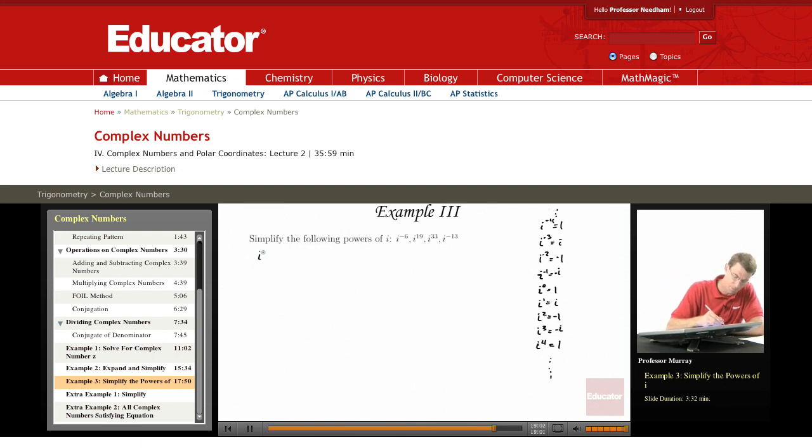So i to the negative 6, if I reduce that down by 4, that's the same as i to the negative 2, and I check over here, i to the negative 2 is negative 1.